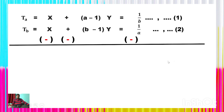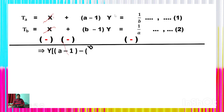Now you have to subtract equation 1 and equation 2. After subtracting, the x terms cancel. You can take y as a common factor: y × [(a−1) − (b−1)] = 1/b − 1/a.